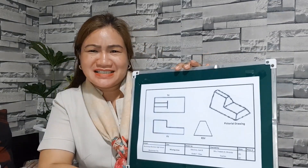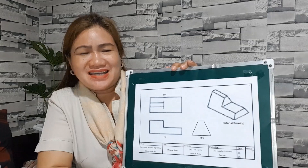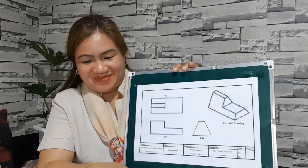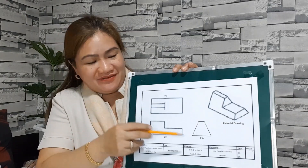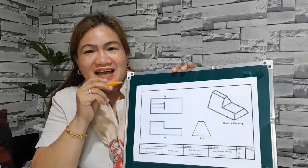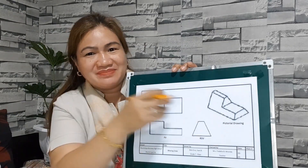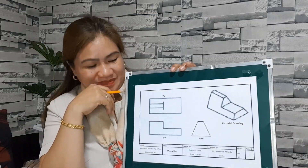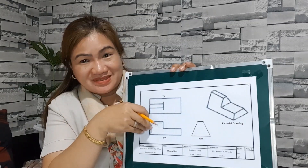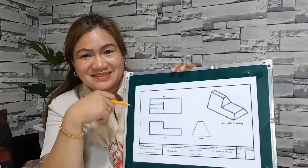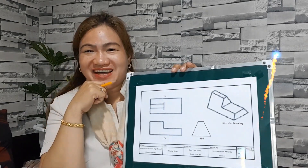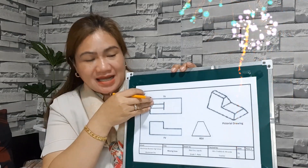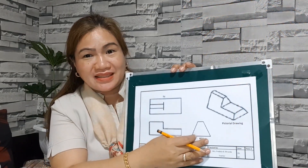Let's keep going. Let us try on this quite difficult and tricky pictorial drawing. Which view is the correct one based from this pictorial drawing? Say top — is it the front or the right side? If your answer is front, you are correct. Therefore, the missing lines are located on the top and on the right side.